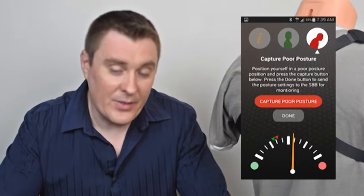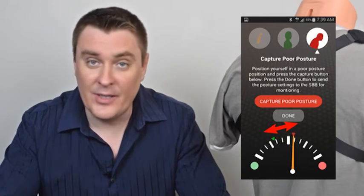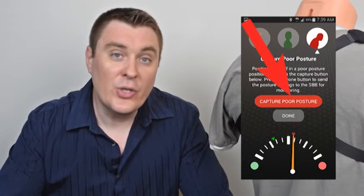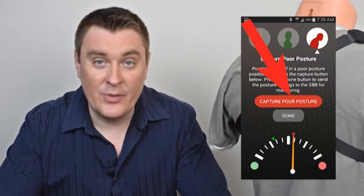For best results the bigger the difference between good posture and bad posture tension, the easier it is for SBB to detect it. When you are sure that the bad posture tension is correct push the capture button to record this level. You will see the red triangle appear on the dial.